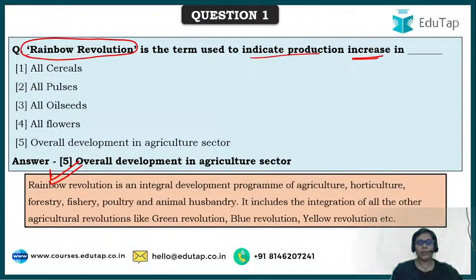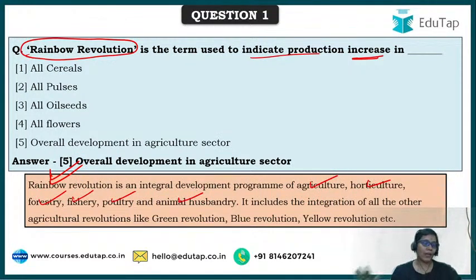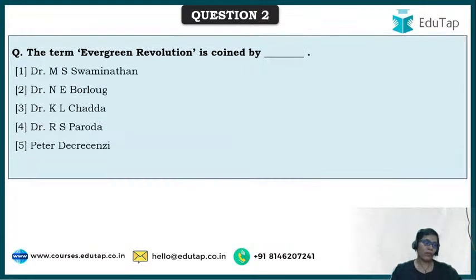So rainbow revolution is an integral development program covering agriculture, horticulture, forestry, fisheries, poultry, and animal husbandry. It includes the integration of all other agriculture revolutions such as green revolution, blue revolution, yellow revolution, white revolution, and all those. This is all about rainbow revolution.